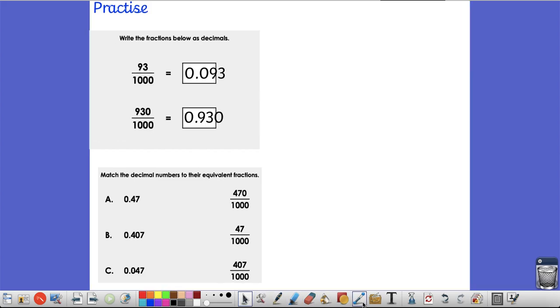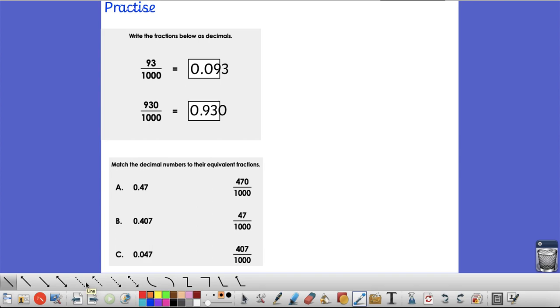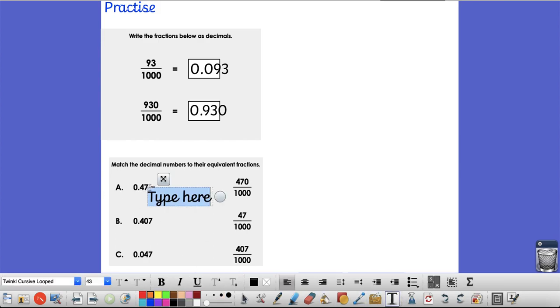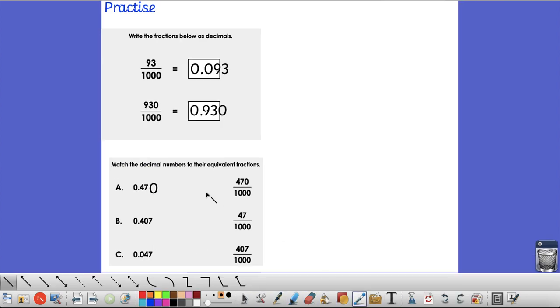Okay, on our next question then, we have got to match up the numbers to their fractions. So, this time, I've got 0.47. So, I'm looking for 4 tenths and 7 hundredths and I'm going to put it in to help me. I'm going to put a 0 at the end and 0 thousandths. I can now see clearly that this actual number here is 470 thousandths. So, that matches to this one here.